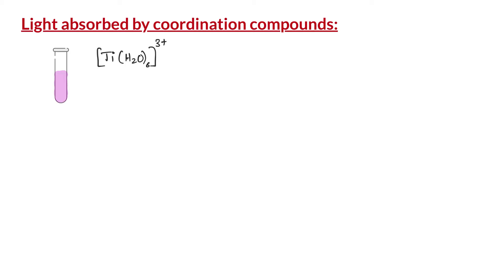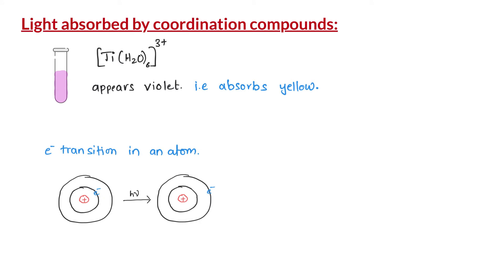Now let us apply this to coordination compounds. The complex ion hexa aqua titanium 3+ is violet in color. Based on what we discussed, the complex ion absorbs the color complementary to violet, that is the wavelengths around yellow color. So the question is: why does the hexa aqua titanium 3+ ion absorb wavelengths around yellow? The energy of the absorbed photon must do something inside the complex. As we learned in the atomic structure chapter, an absorbed photon can excite an electron from a lower energy level to a higher energy level, and a similar electronic transition occurs inside the titanium 3+ ion when it absorbs a photon.